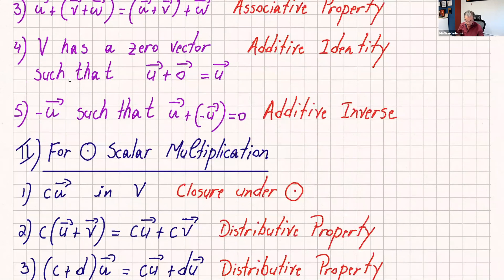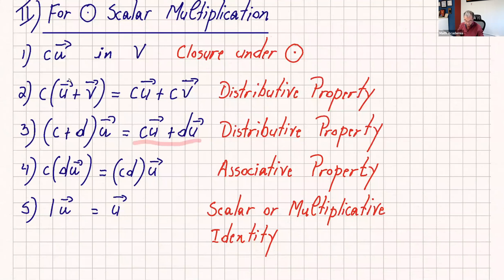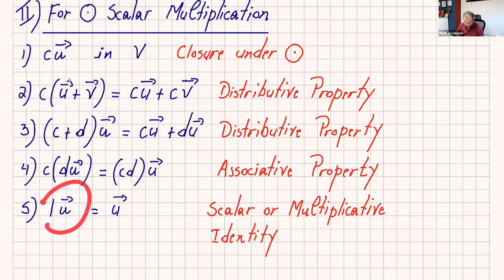Once done with those five, you can go to scalar multiplication. cu must be in V — that's closure under scalar multiplication. c times (u plus v) equals cu plus cv — that's distributive property one. (c plus d) times u equals cu plus du — that's distributive property two. c times (du) equals (cd) times u — the associative property for scalar multiplication. And 1 times u equals u — which is the scalar identity.